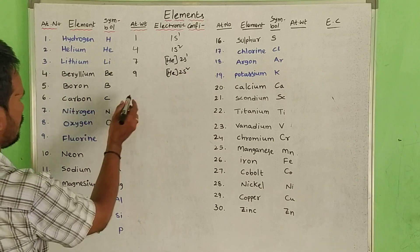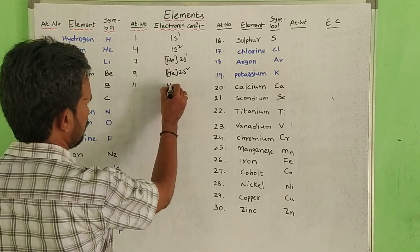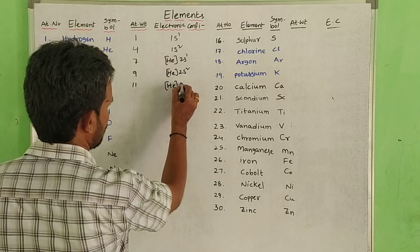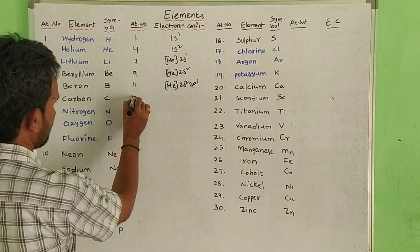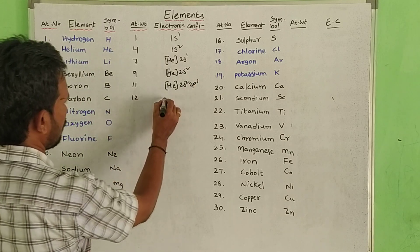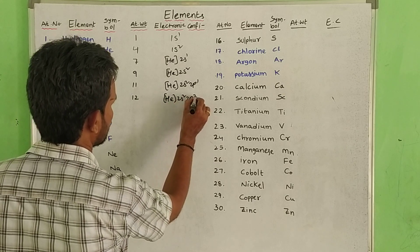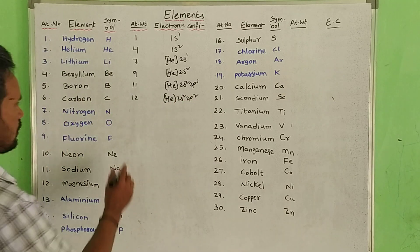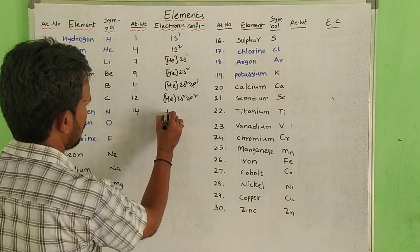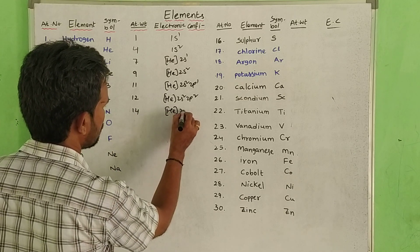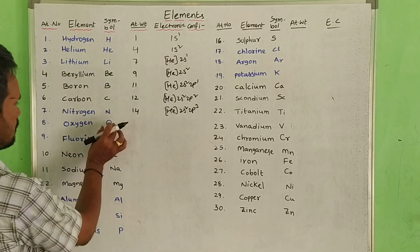Next: boron, atomic weight 11 — electronic configuration [He] 2s2 2p1. Next: carbon, atomic weight 12 — [He] 2s2 2p2. Next: nitrogen — [He] 2s2 2p3.